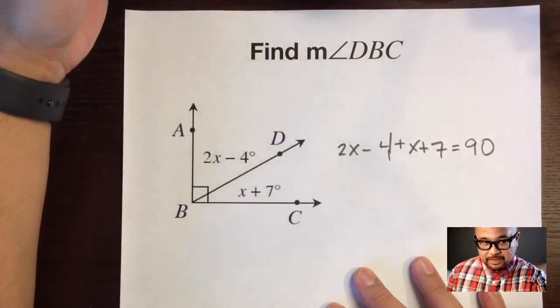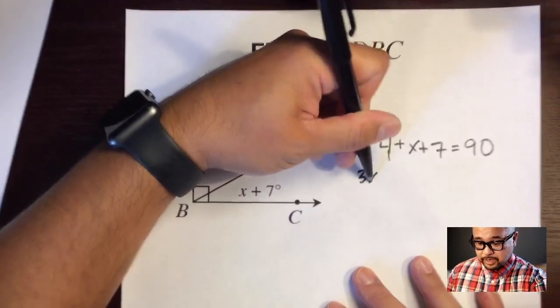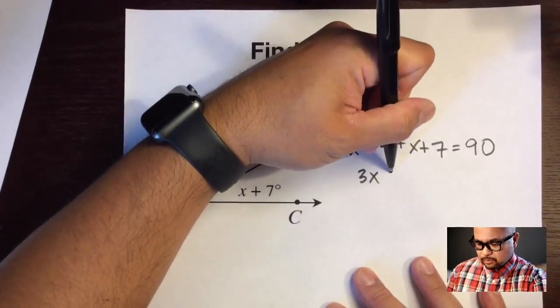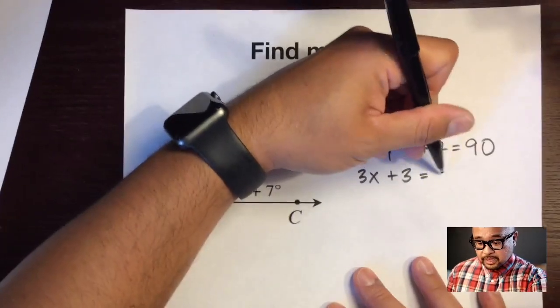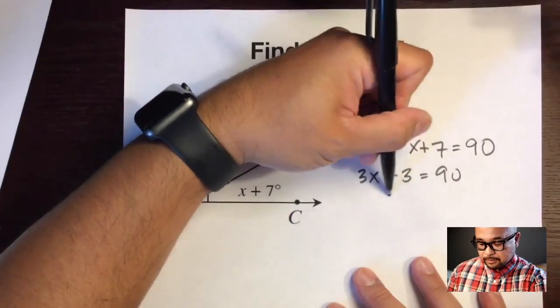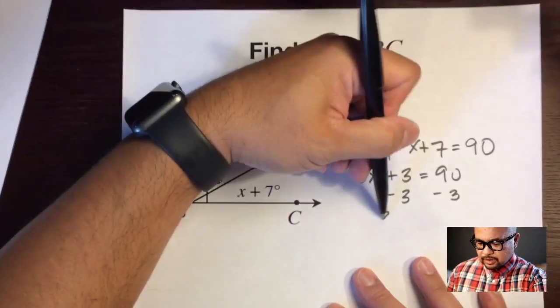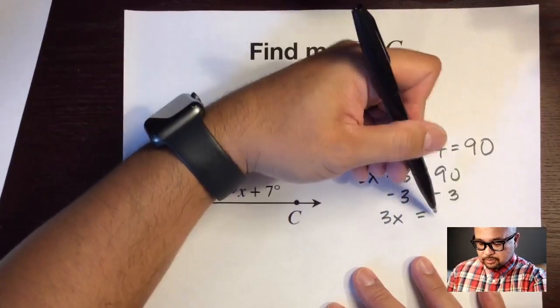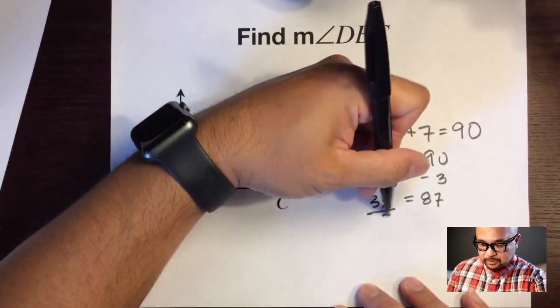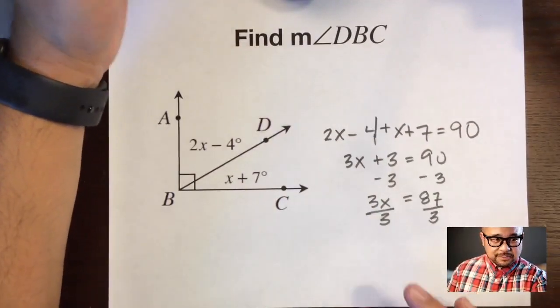From there on we just do some basic algebra. Let's combine some like terms. 2x plus 1x is 3x, negative 4 plus 7 is positive 3, is equal to 90. Then we'll subtract 3 from both sides and we'll have 3x is equal to 87.